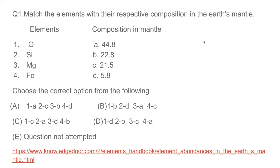Question number 1: Match the elements with their respective composition in the Earth's mantle. Which element is in the Earth's mantle? The question gives oxygen, silicon, magnesium, and ferrous with compositions of 44.8%, 22.8%, 21.5%, and 5.8%. We know that the Earth's mantle is the middle layer.